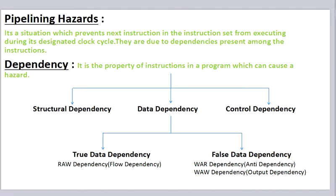Pipelining Hazard is a situation which prevents the next instruction in the instruction set from executing during its designated clock cycle. They are due to dependencies present among the instructions. Dependency is the property of instructions in a program which can cause a hazard.